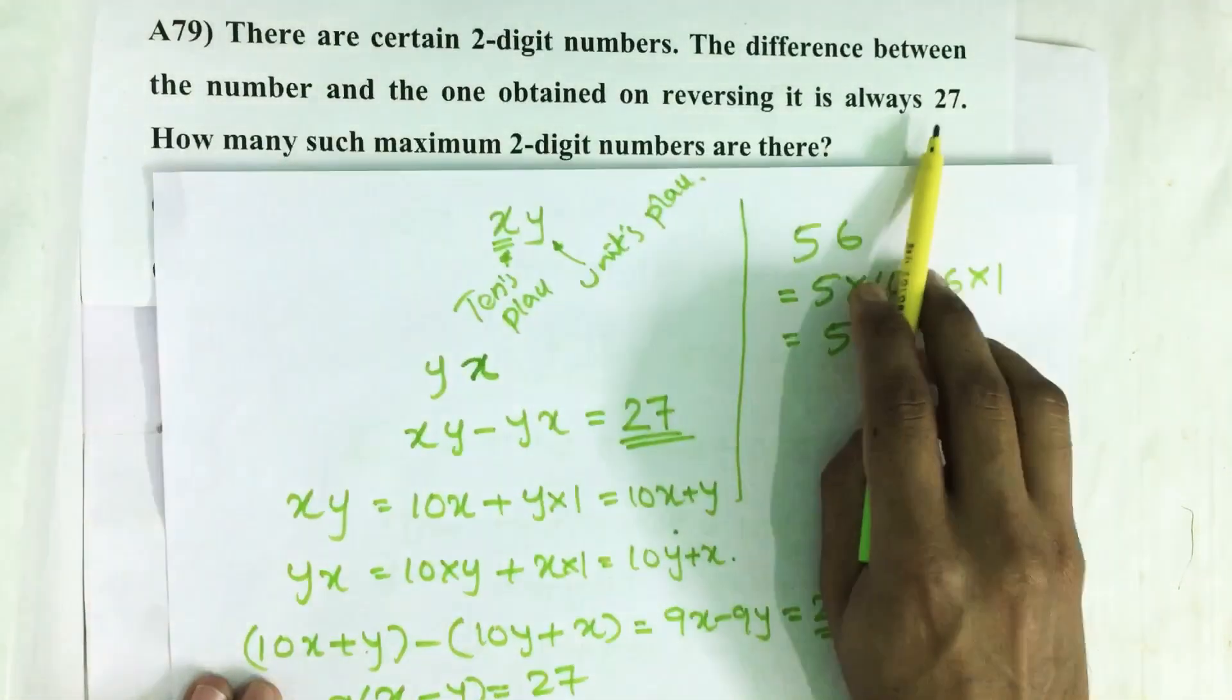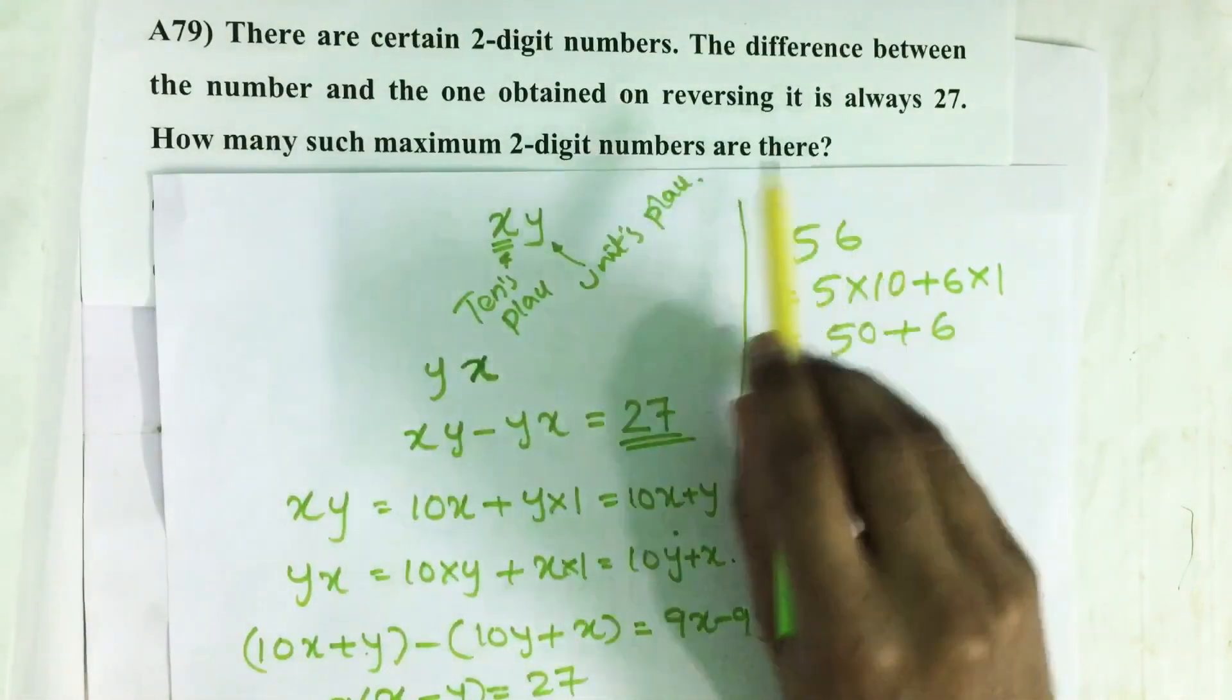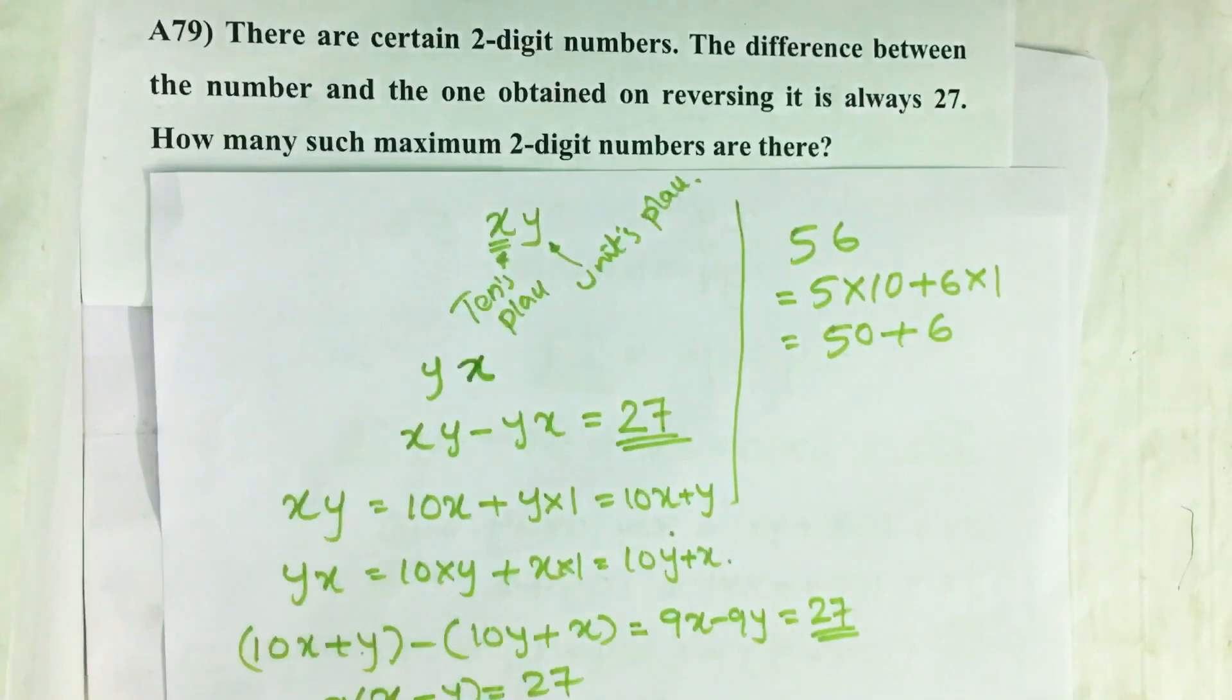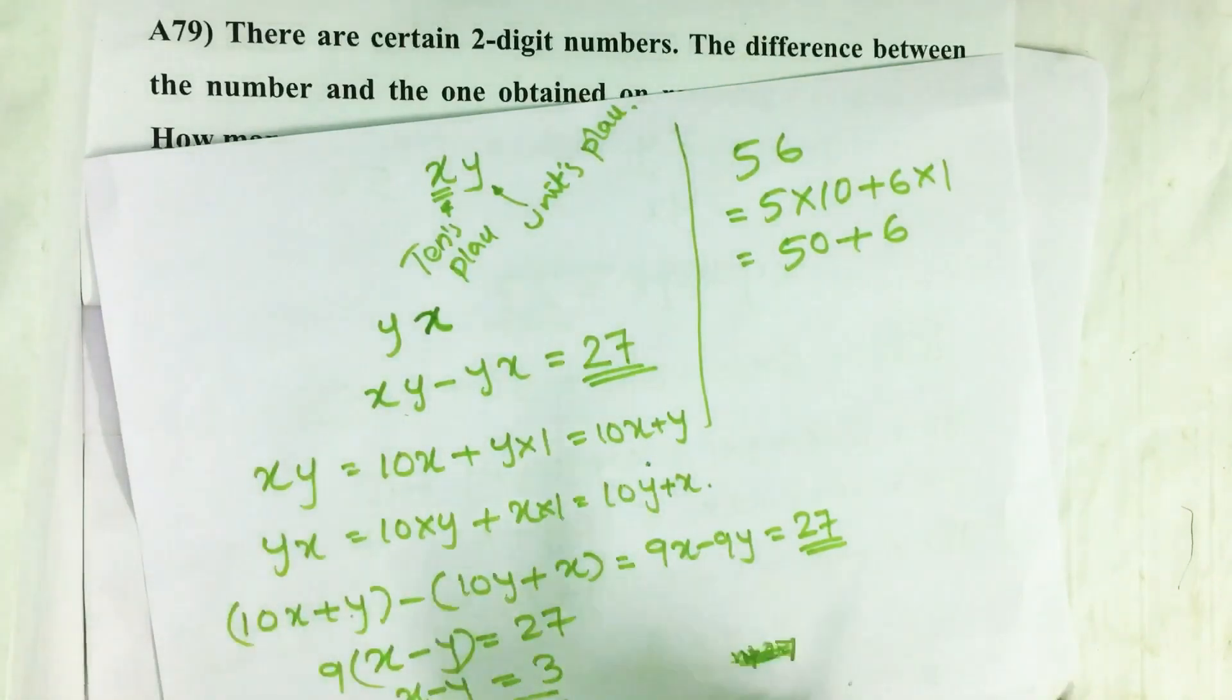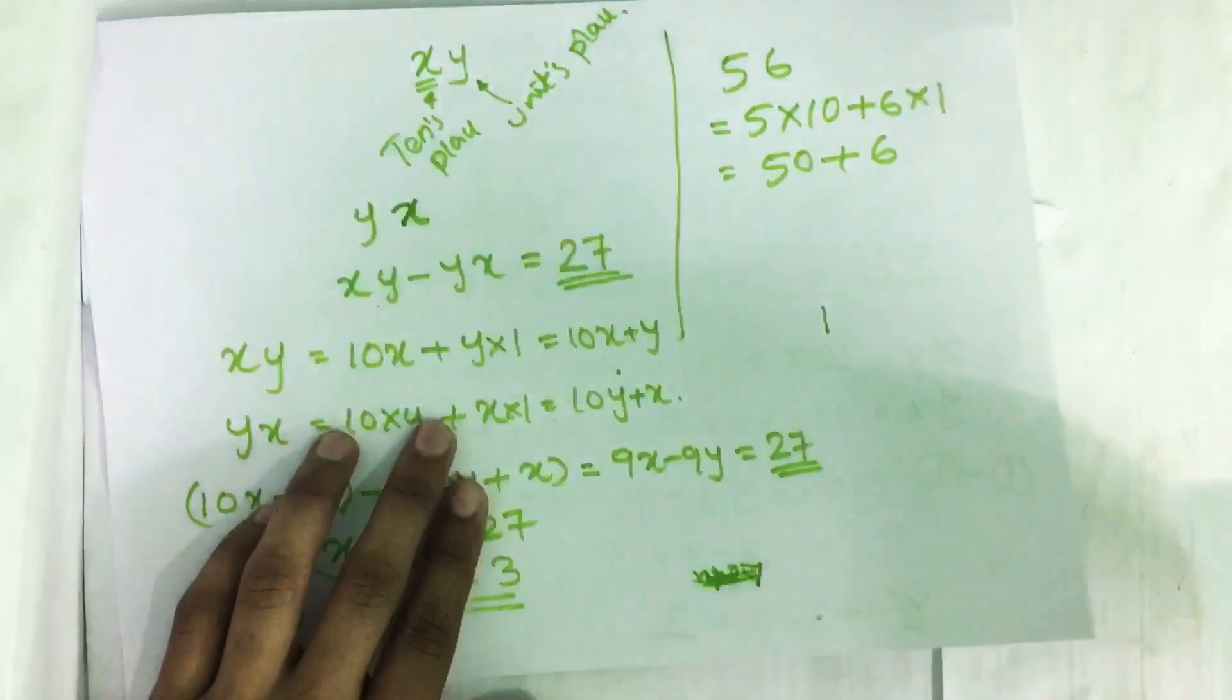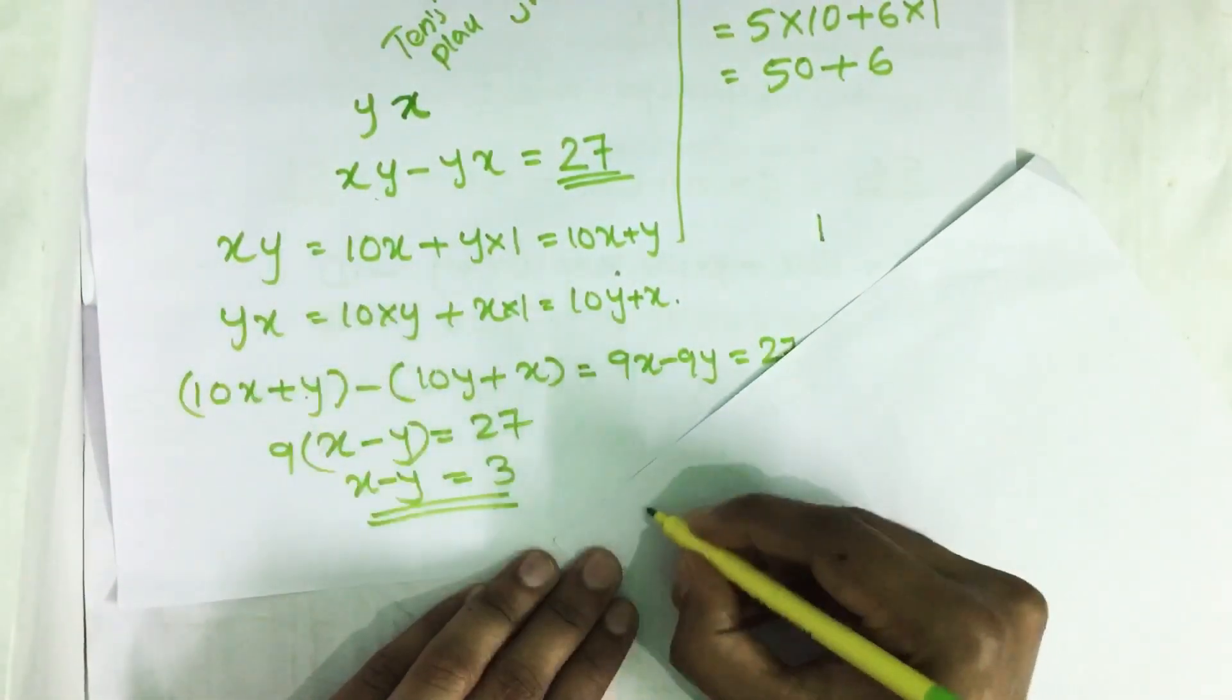That gives the difference. On reversing the number we get 27 which satisfies this equation. So let us see how many such two-digit numbers are there.